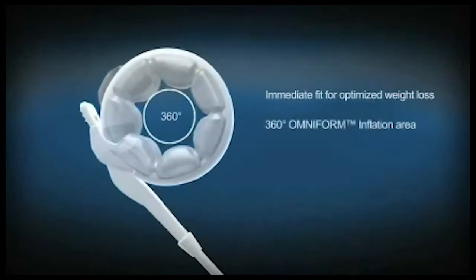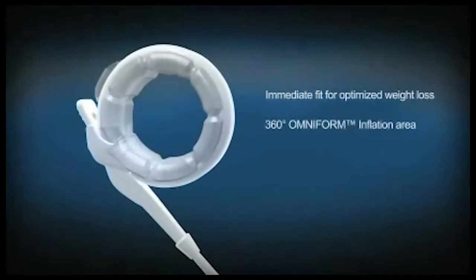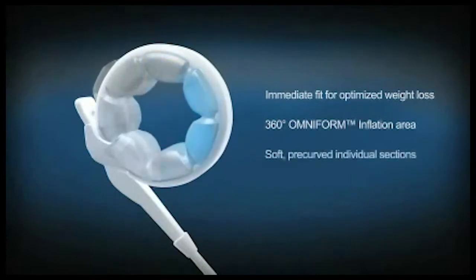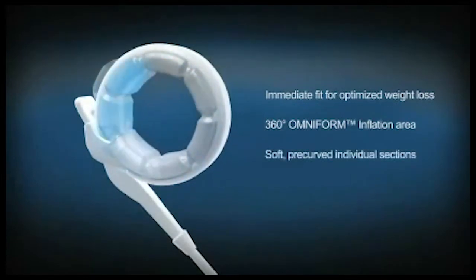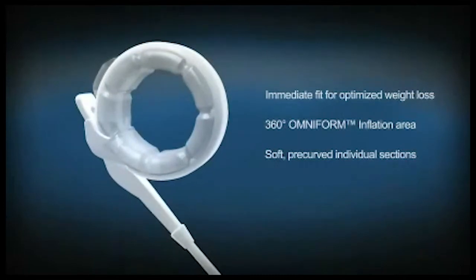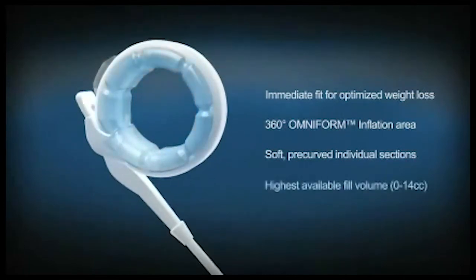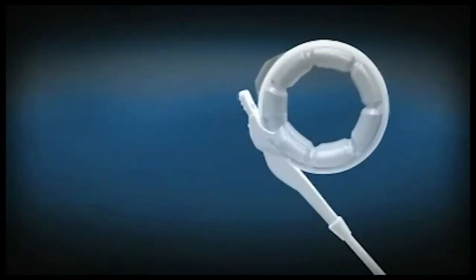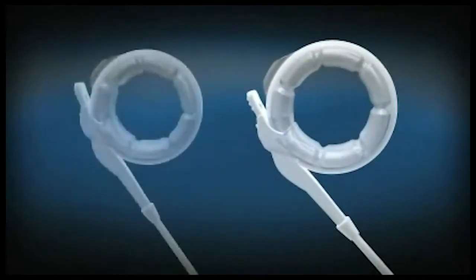Omniform inflation provides 360 degrees of pressure evenly delivered throughout the band for complete stomach coverage. Soft and flexible pre-curved individual sections help minimize the potential for leaks from creases or folds. The highest fill volume available leads to greater flexibility and customized adjustments. Available in two sizes to accommodate different anatomy and individual needs.